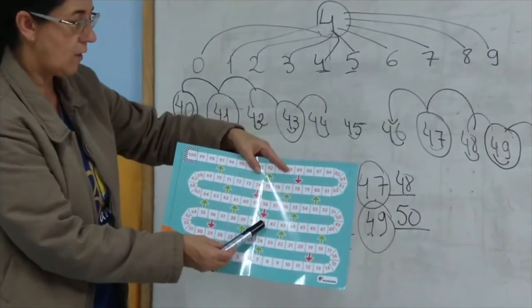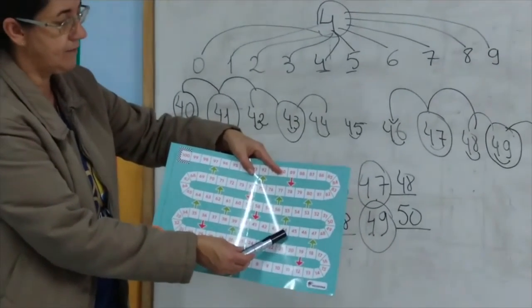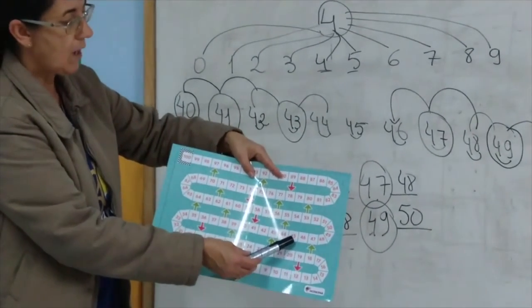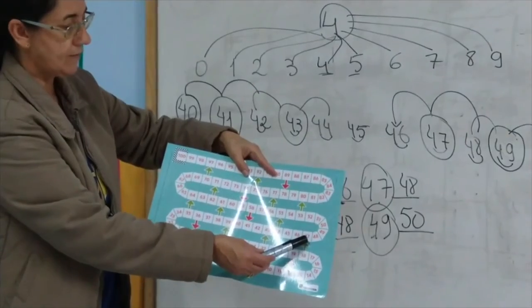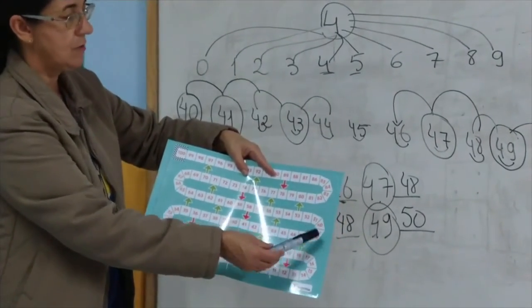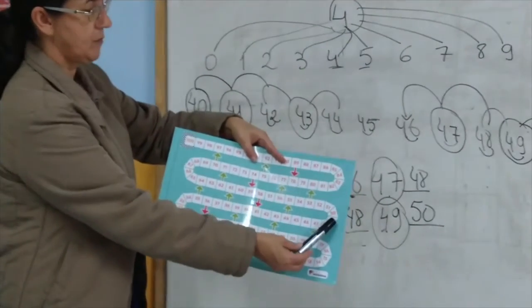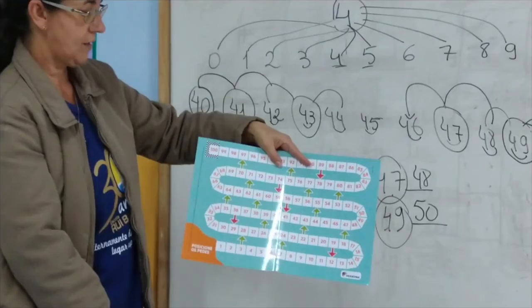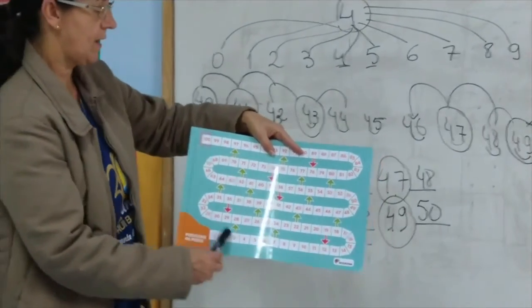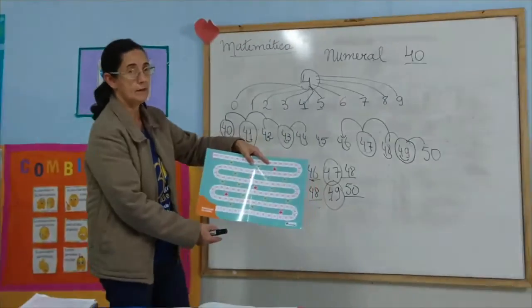É a família que nós estudamos hoje. 40, 41, 42, 43, 44, 45, 46, 47, 48, 49. Então, nós paramos aqui na parte da pista, certo? Era só para contar a sequência.